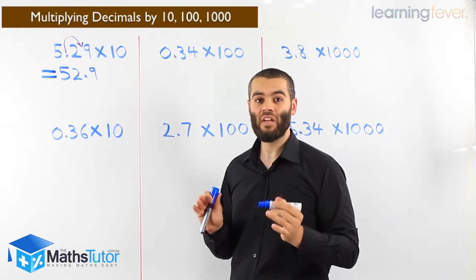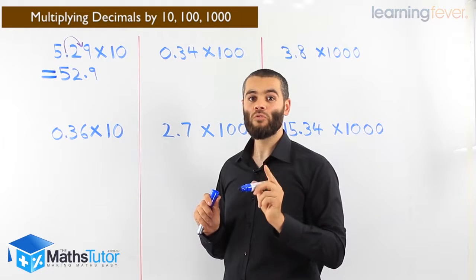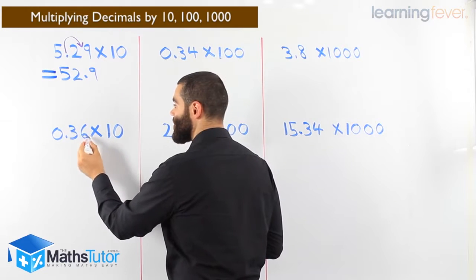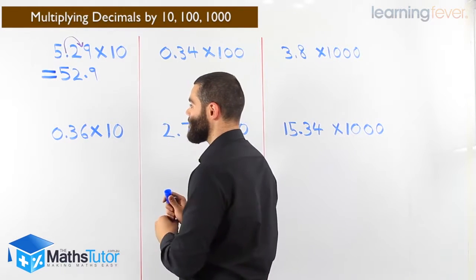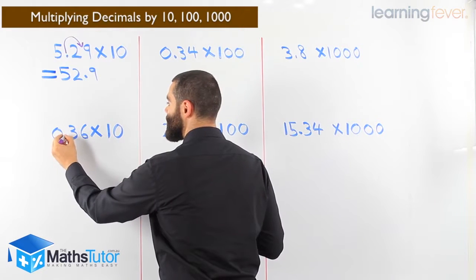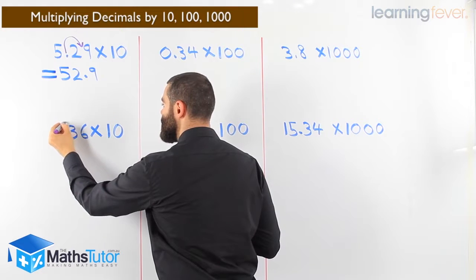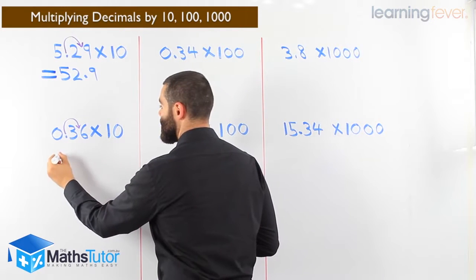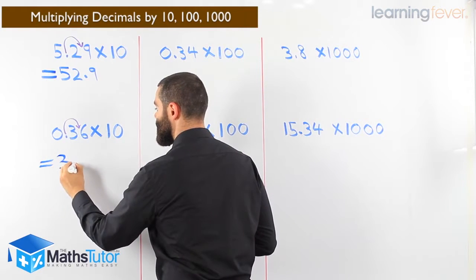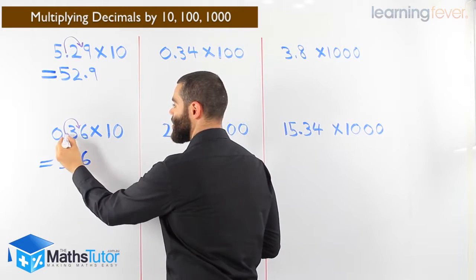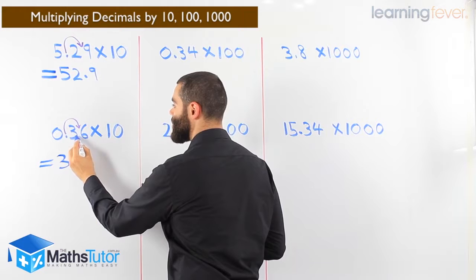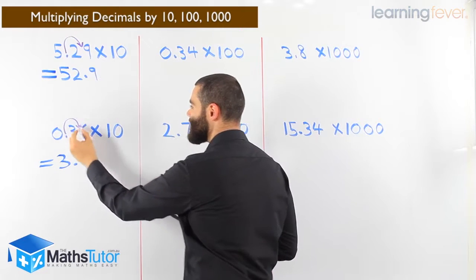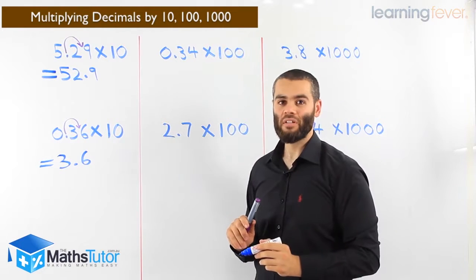0.36 times ten. Ten has one zero, so we've got to move once - which way? To the right. 0.36 times ten means we're going to move the point. We're going to grab it and say, you don't belong over here, you belong over here. All of a sudden, we have 3.6. It's going to be between the three and the six. 3.6 times ten - one zero, move it once to the right.